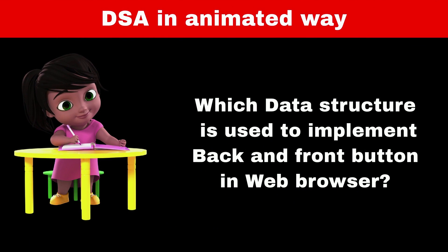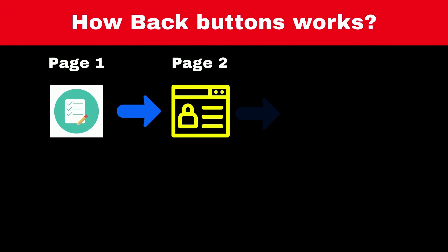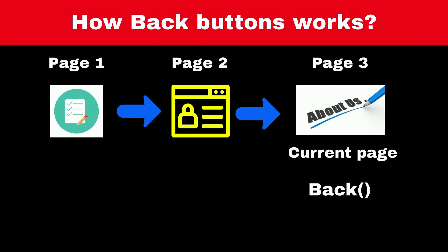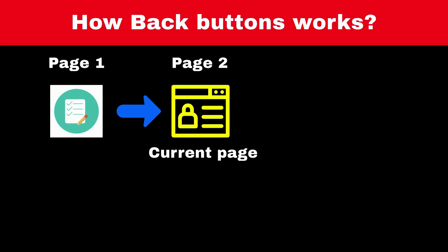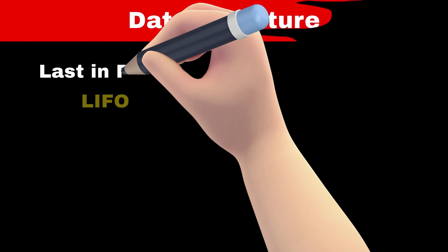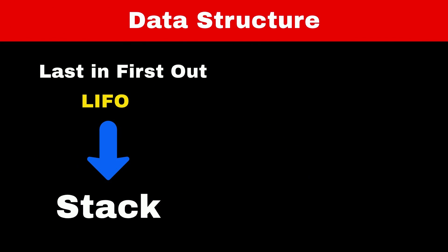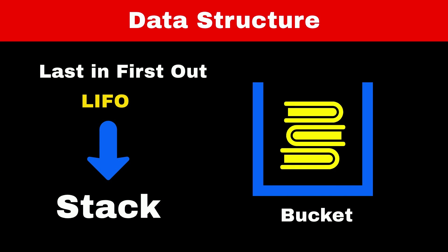Do you know which data structure is used to implement the back and forward buttons in a web browser? Suppose we navigate from page 1 to page 2 to page 3. When we press the back button from page 3, we go to page 2, and pressing back on page 2 takes us to page 1. We are navigating to the last visited page — this operation is called Last In, First Out. The data structure that allows this operation is called a stack. Consider a stack as a bucket closed from one side — whatever you put in last, you can remove first. It is the exact opposite of a queue.